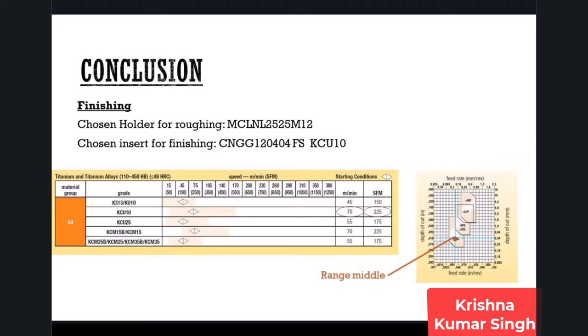For finishing cutting data, we will set a feed of 0.13 mm per revolution or 0.005 inches per revolution. For finishing, the insert grade is KCU-10, so our starting surface cutting speed will be 70 meters per minute or 225 feet per minute.